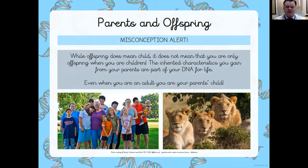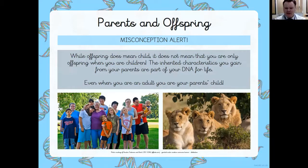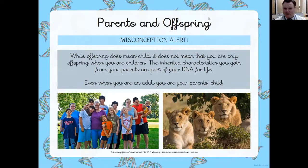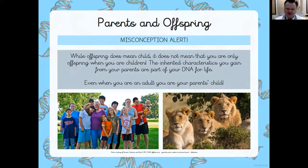While 'offspring' does mean child, it doesn't mean you're only offspring when you are a child. We're all offspring — myself and all adults included — we're offspring of our own parents, and we've got characteristics from them which are in our DNA. You can see a diagram of DNA in the background — that curling structure. That's what makes you you and me me. It's a specific sequence, or code, which makes you you, and it's in every cell in your body. Incredible!